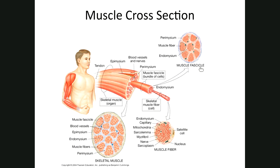Those bundles are called fascicles — like a bundle of sticks or a bundle of pencils is a fascicle, a bundle of muscle fibers is also a fascicle. Looking at the picture, you can see eight fascicles here. When the epimysium goes in and covers a bundle of muscle fibers, that covering is called the perimysium.